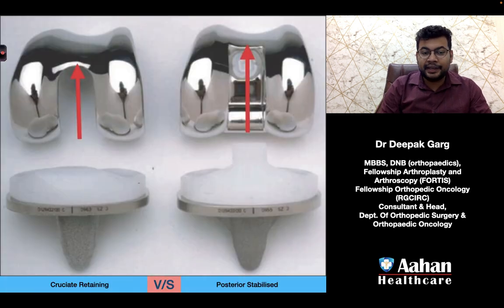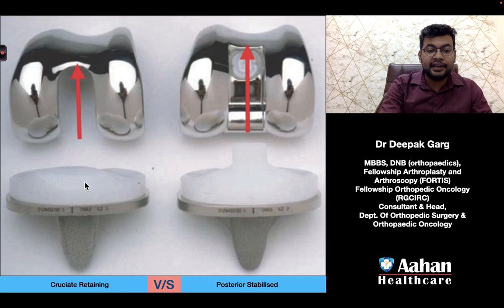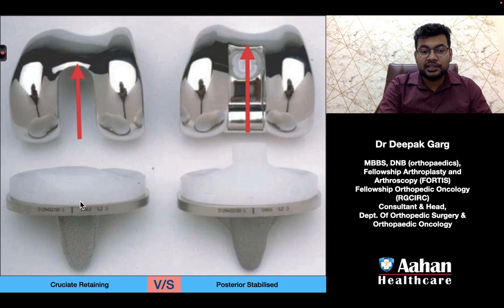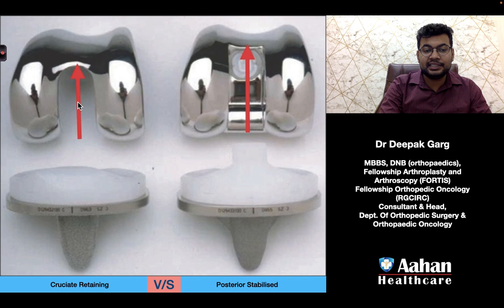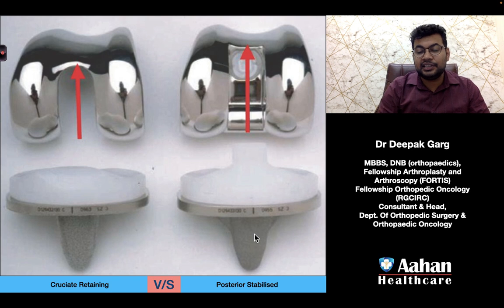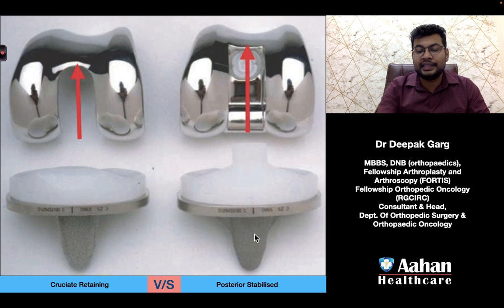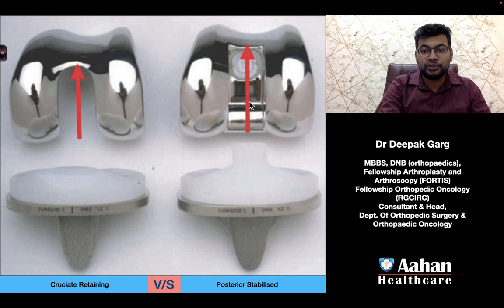Now let's compare cruciate retaining versus posterior stabilized knees. In cruciate retaining (CR), we do not cut the PCL — the PCL is intact. Both the tibial tray insert and the femoral component have space posteriorly for the PCL. In the posterior stabilized (PS) knee, we cut the PCL, so something must replace its function — that is the post and cam mechanism, which replaces the function of the posterior cruciate ligament.